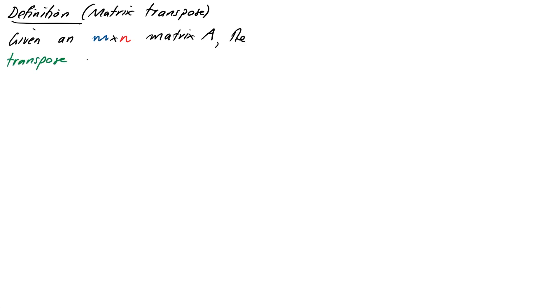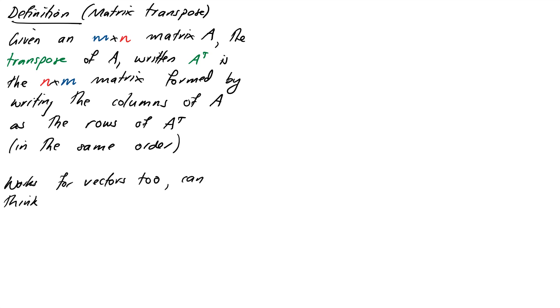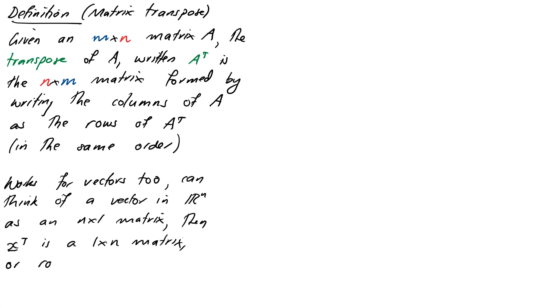The definition of the transpose: given an m by n matrix, the transpose of A, written as A^T, is the n by m matrix formed by writing the columns of A down as the rows of A^T in the same order. For example, if we take the matrix with rows (1,2,3) and (3,4,6) and take its transpose, we started with a 2 by 3 and produce a 3 by 2 where the first column is 1,2,3 and the second column is 3,4,6.